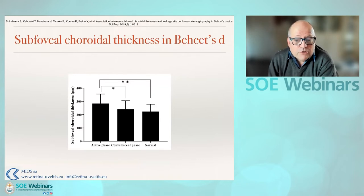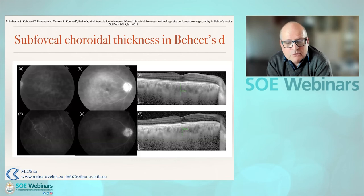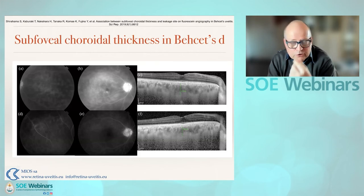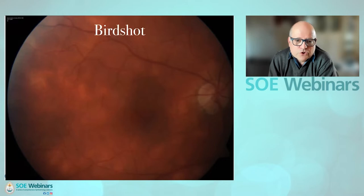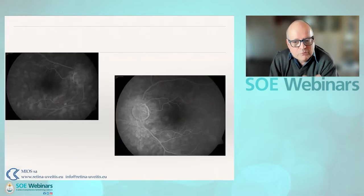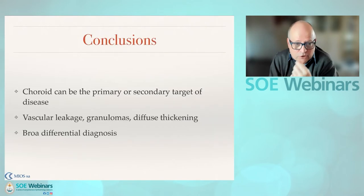Behçet's disease can also give you an increase in choroidal thickness. This may be a better way to monitor response to treatment than just the fluorescein, if you're able to see the back of the eye — the choroid certainly gives a better impression of the response to therapy. With regards to birdshot, we've already talked about the importance of looking at both the choroidal circulation, where we saw vasculitis, and the retinal circulation. Vasculitis can be present in both at the same time, but often there's a discrepancy. ICG can show you active choroidal disease even in the presence of less disease in the retina.